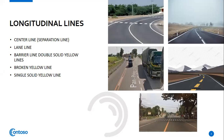First are the longitudinal lines. There are different types such as center lines, lane lines, barrier lines, double solid yellow lines, broken yellow lines, and single solid yellow lines. The center line or separation line — as you can see in the picture, this is what we call the separation line. Crossing of these solid white lines requires special care and is discouraged, especially for overtaking.